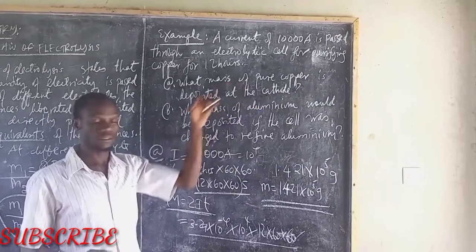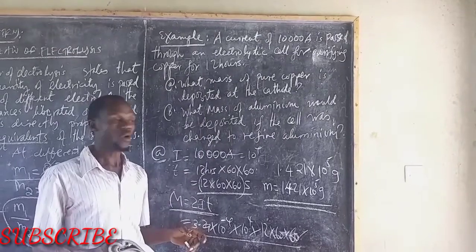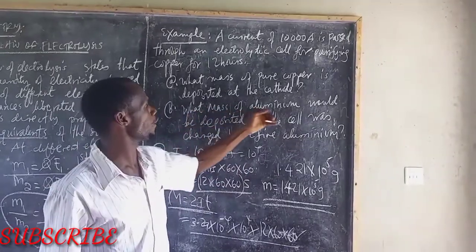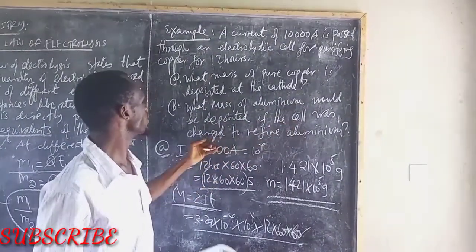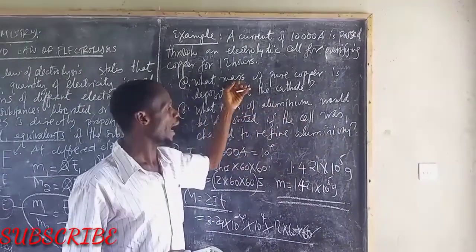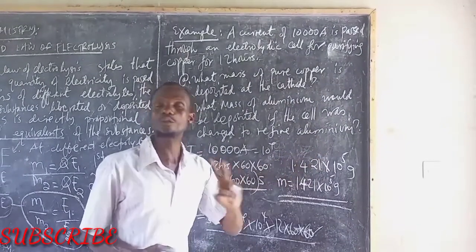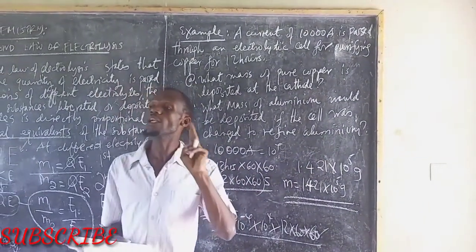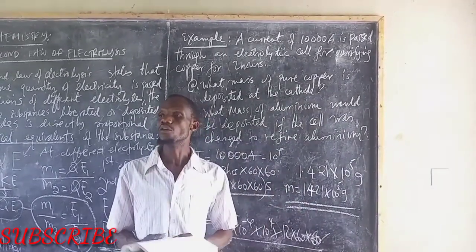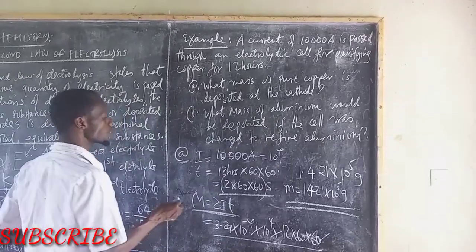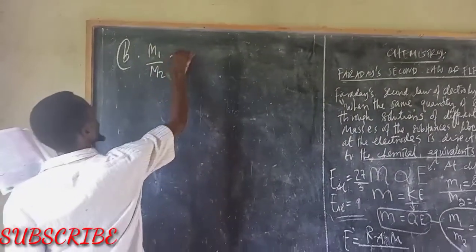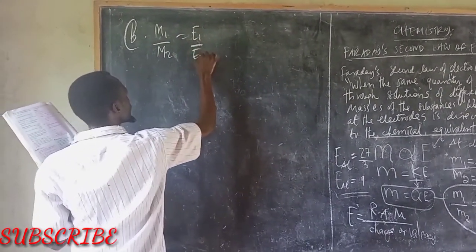Now we have copper and aluminum. We have two things, two different electrolytes. If now we have two different electrolytes, so part B, we don't use the previous formula. We use this one: M1 over M2 is equal to E1 over E2.